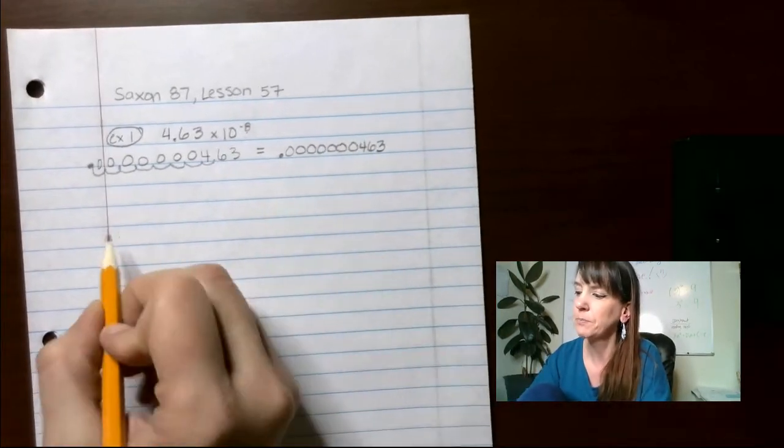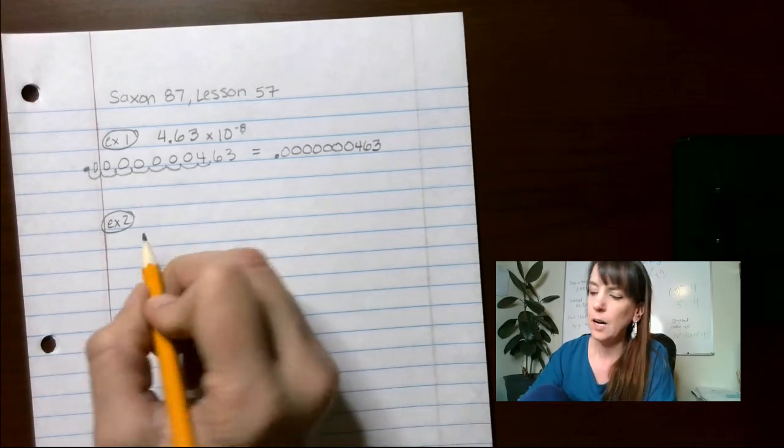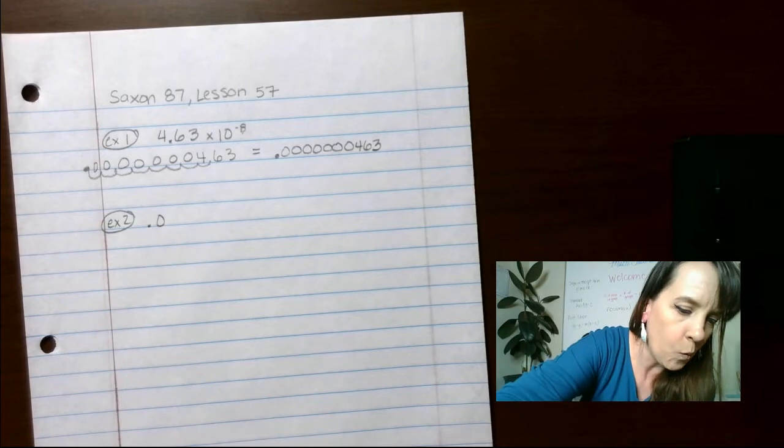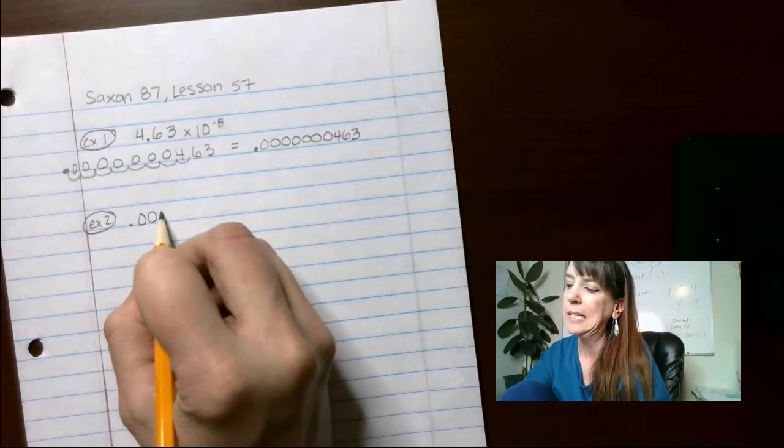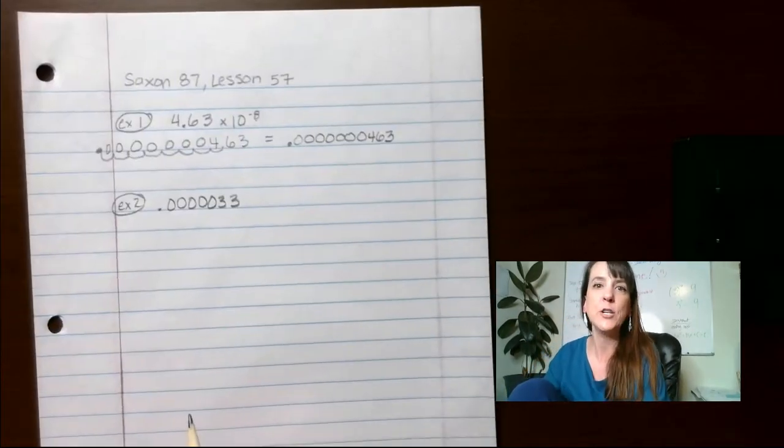Example number 2. For this guy, we have 0.000033, 1, 2, 3, 4, 5, 3, 3 in scientific notation.